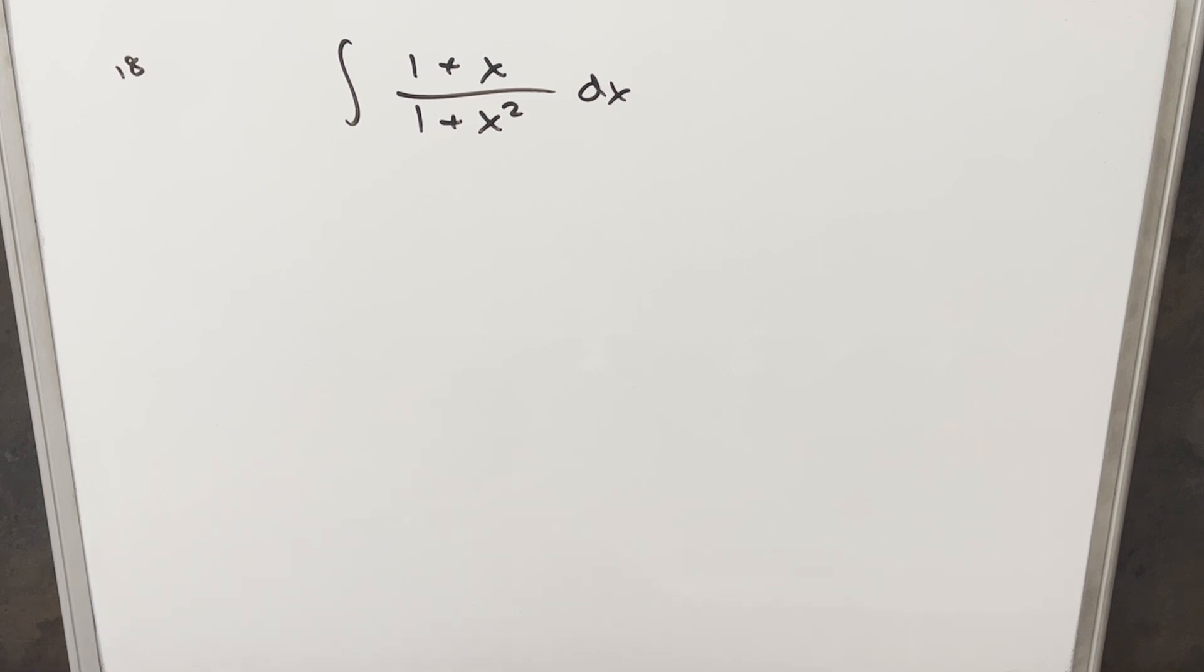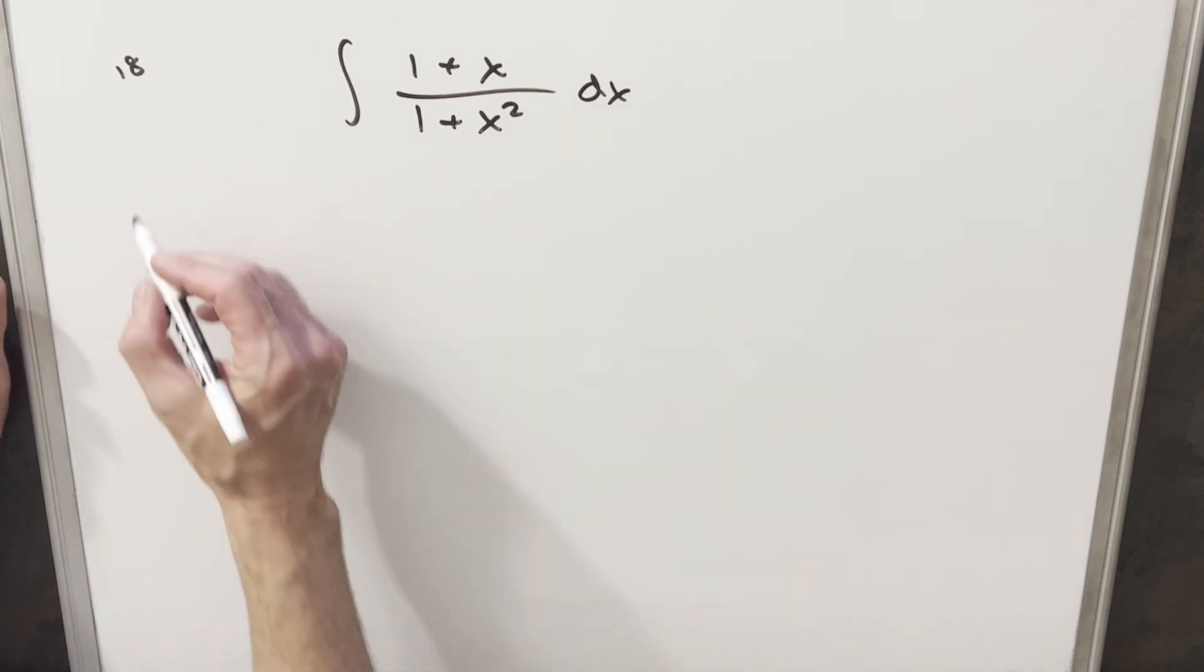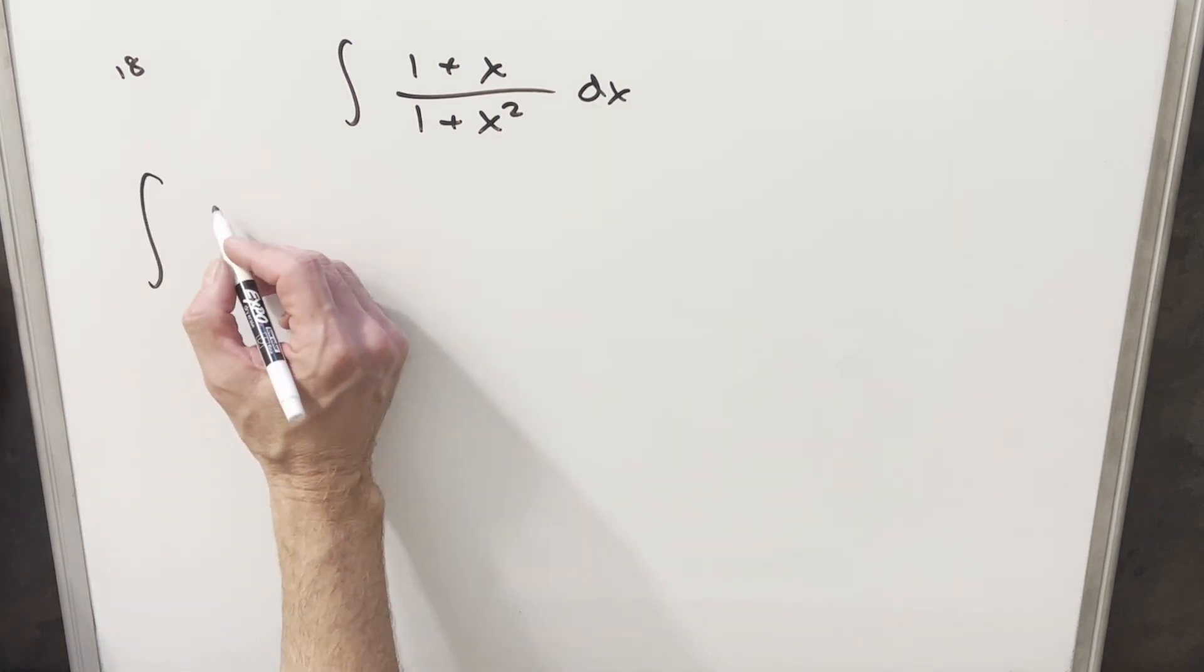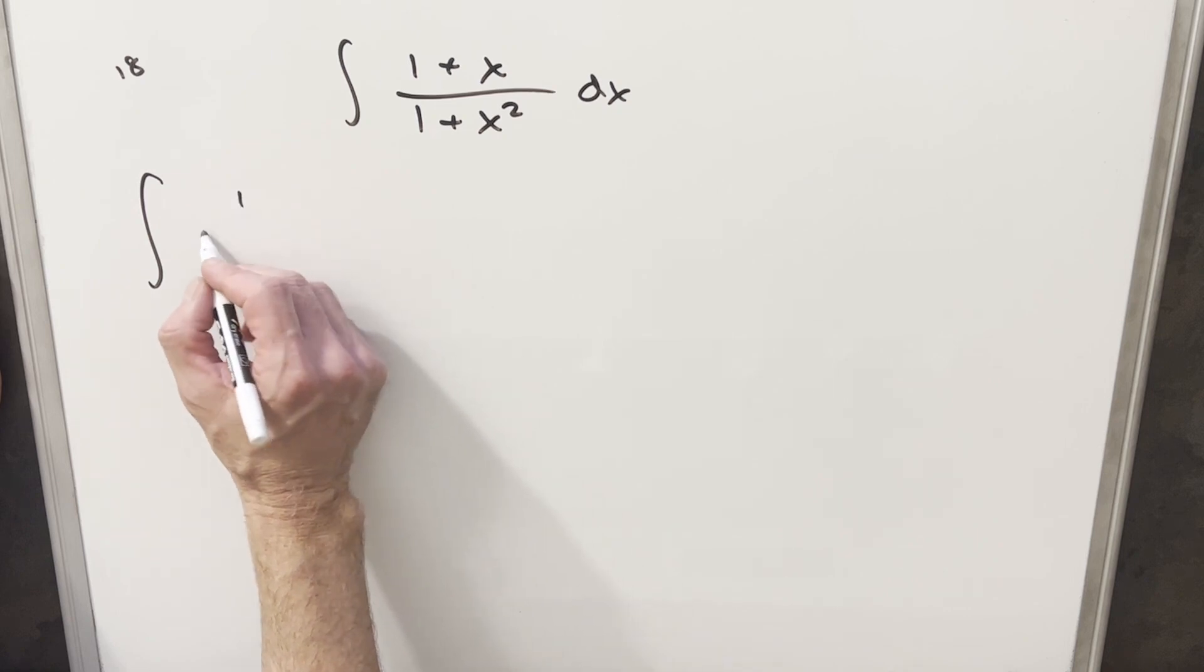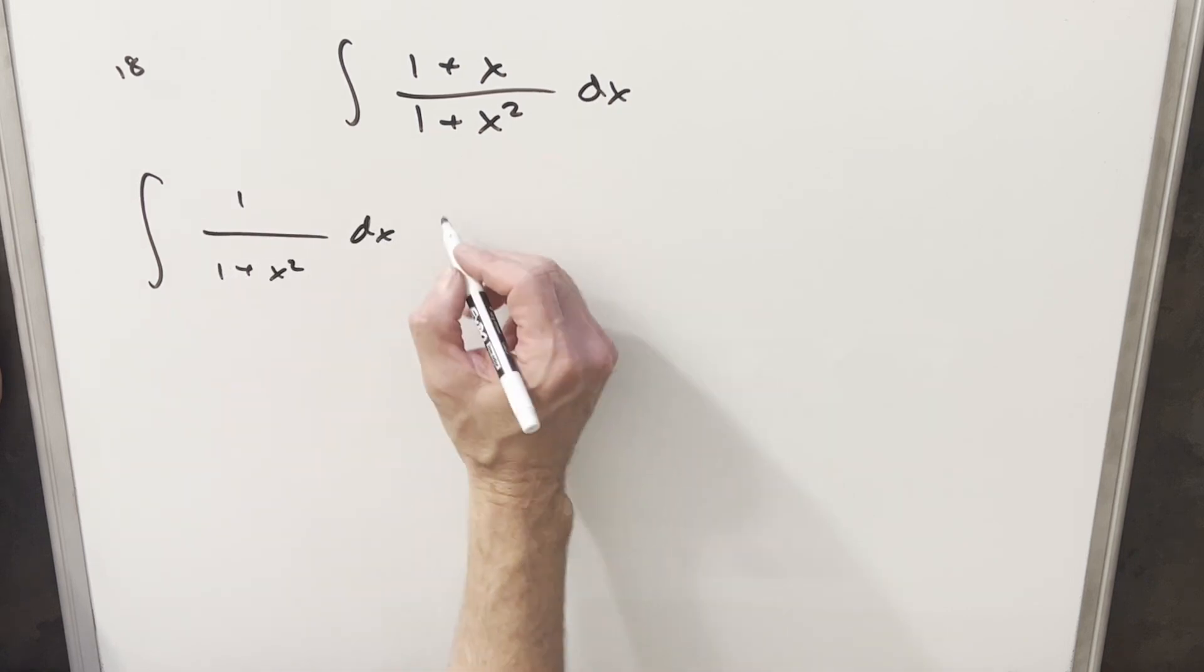When I first looked at this, I was trying some complicated factoring and kind of overthinking it, and what I realized was we can actually just break this into two separate integrals. So if I do that, for the first one, I'm just going to have 1 in the denominator. And then for the second one, we're just going to have x.